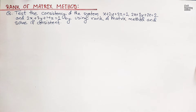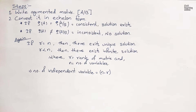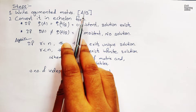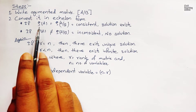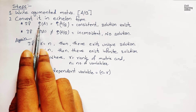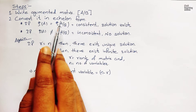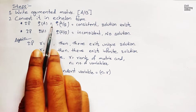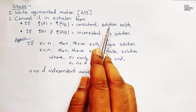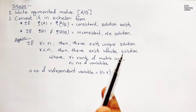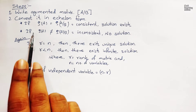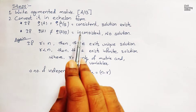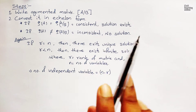Let me take you familiar with the statements about the rank of matrix method. The first thing is we need to write the augmented matrix of the given system of equations. After that we have to convert the augmented matrix into echelon form. Then we check if rank of A is equal to rank of the augmented matrix, denoted as A:B. If these two ranks are equal, then it is consistent and the solution will exist. If rank of A is not equal to rank of augmented matrix AB, then it is inconsistent, meaning there is no solution.